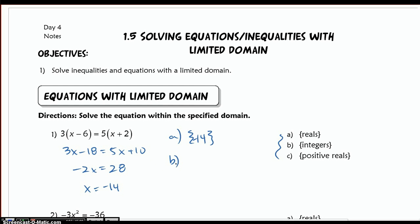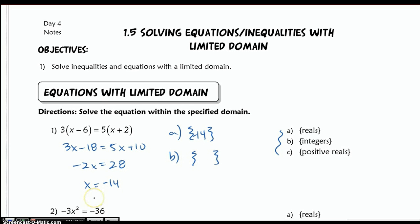Part B says I only want integers. So again, I make my brackets and I say, is negative 14 an integer? It is, so it is also part of my solution. So it does belong in the solution set.